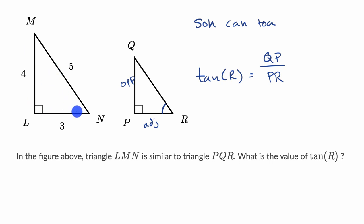And what we know about similar triangles is the ratio between corresponding sides is always the same. So QP, this side right over here, corresponds to ML right over here. So that's QP. And PR corresponds to LN right over here.